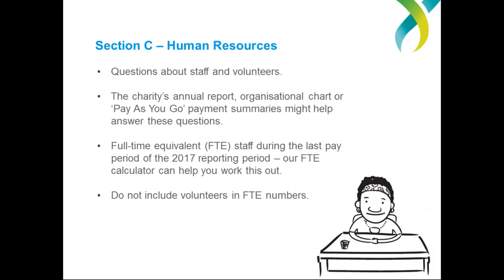So that's Section B done. Section C is a shorter section focusing on your charity's human resources — its staff and volunteers. It asks you to fill in the number of employees, both full and part-time, and also the number of volunteers. Your annual report, organisational chart, or pay-as-you-go payment summaries can all help you answer these questions. It's important to remember that volunteers can be regular — helping out every day, week or month — or irregular, semi-regular or one-off. Volunteers can also include any unpaid board or committee members.